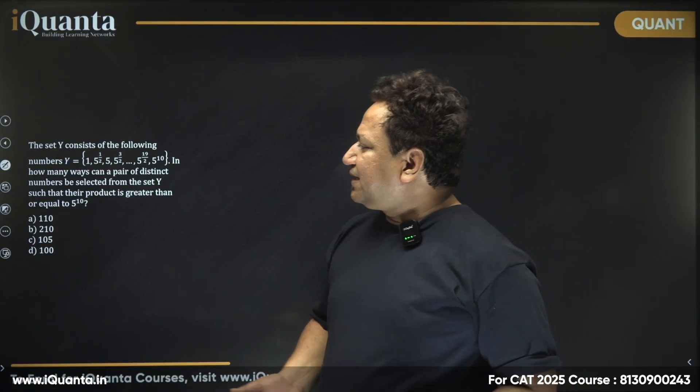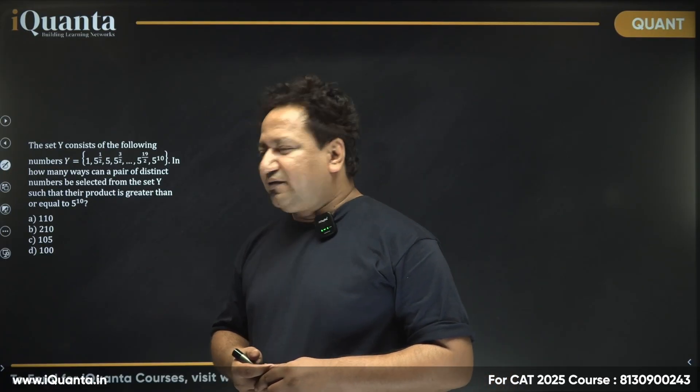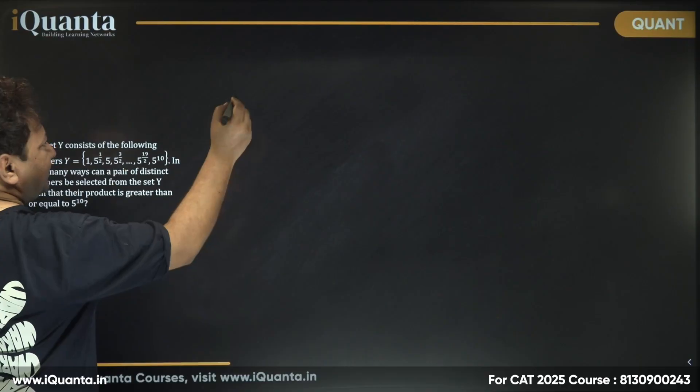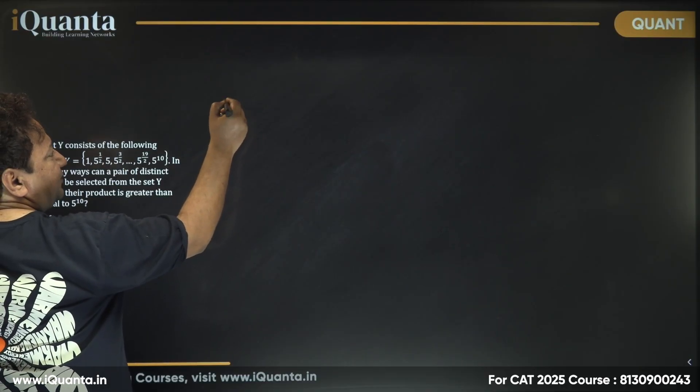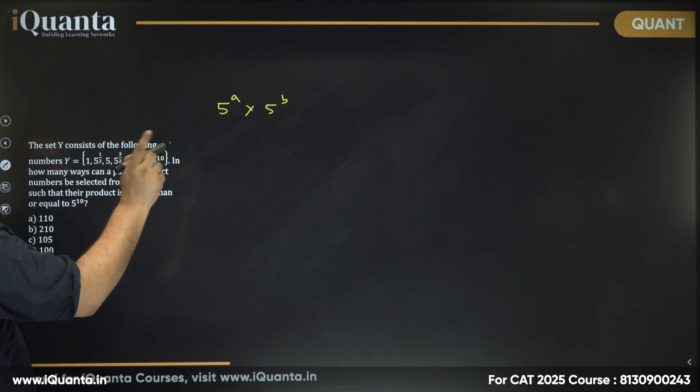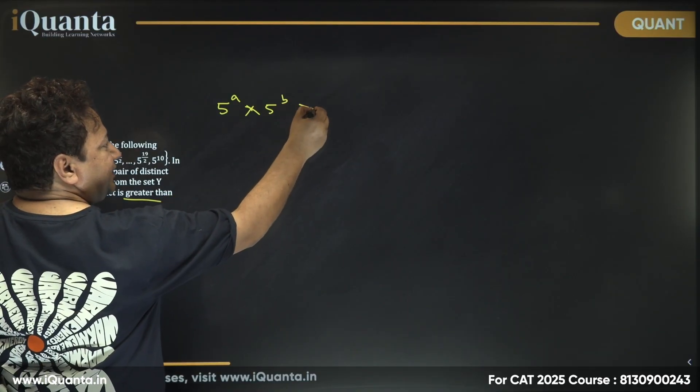In how many ways can a pair of distinct numbers be selected from the set Y such that the product is greater than or equal to 5^10? So let's say I select two numbers which are 5^a and 5^b. If I multiply them, I should get a product which is greater than or equal to 5^10.